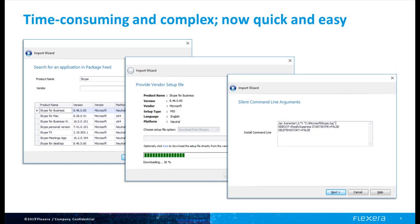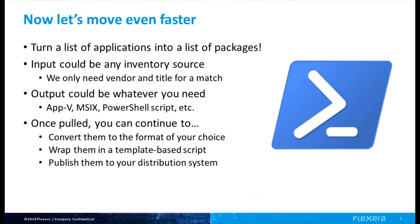Thanks to the automation capabilities provided in Admin Studio Enterprise, you can completely automate this whole process. With this, you'll be able to turn a list of applications into a list of packages. The input can be any inventory source — we only need the vendor and the title to do a match. And the output, of course, can be whatever format you desire.